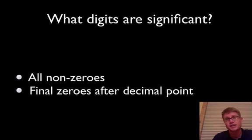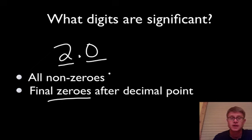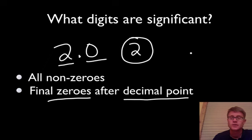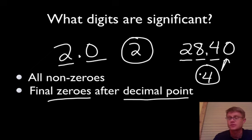Final zeros after the decimal place are always significant. For example, 2.0 has 2 significant digits — the 2 is significant and the final zero after the decimal place is also significant. Or take 28.40: the 2, 8, and 4 are significant, and that final zero is also significant by this rule, giving 4 significant digits total.